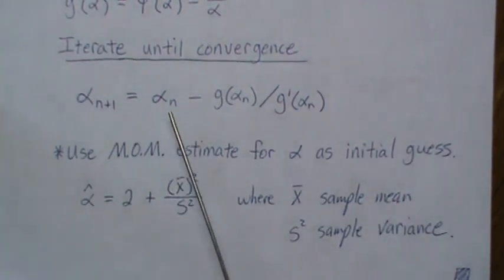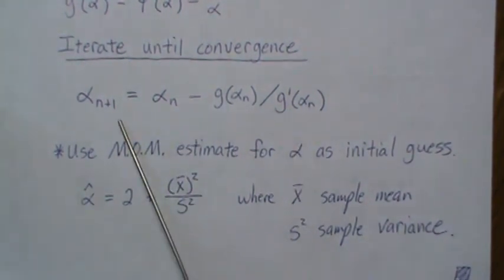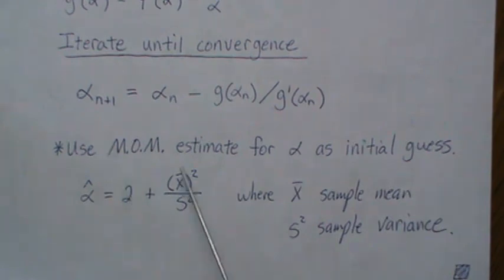And there we derived it as 2 plus the mean squared over the sample variance. And then we use this as an initial guess. And then we iterate until convergence.